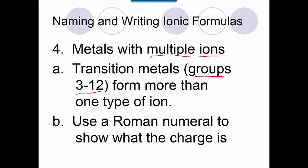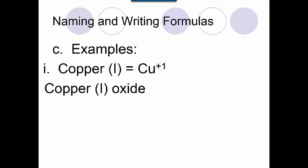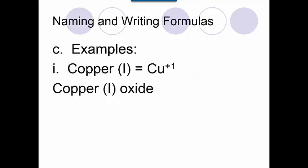So we will show that charge with a Roman numeral, since it's not something we can just look at our periodic table and know. So this is the way this is going to look. Copper is in that 3 through 12 group of elements. Sometimes you may see copper and then have a Roman numeral in parentheses behind it.